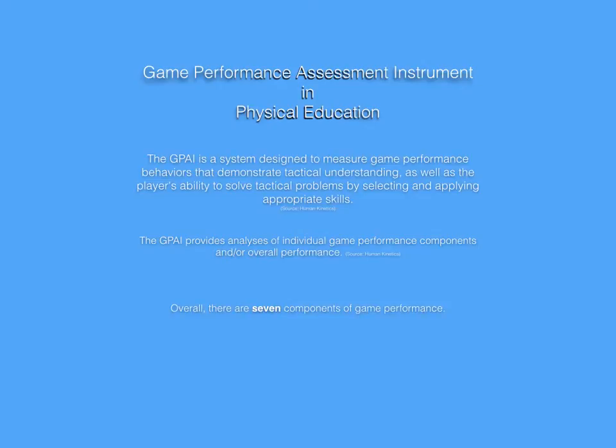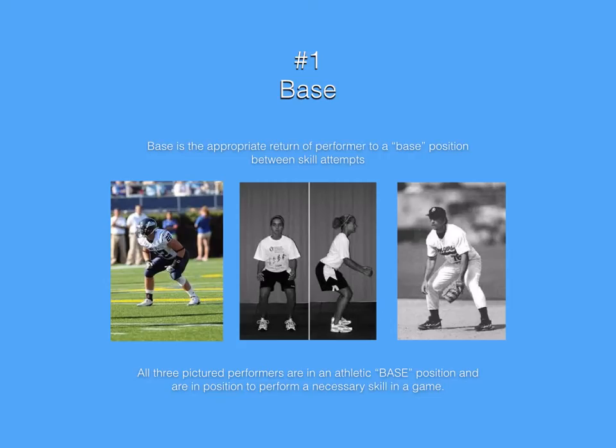There are seven components of game performance. The first one is base. Base is the appropriate return of a performer to a base position between skill attempts. All three pictured performers are in an athletic base position and are in position to perform a necessary skill in a game.